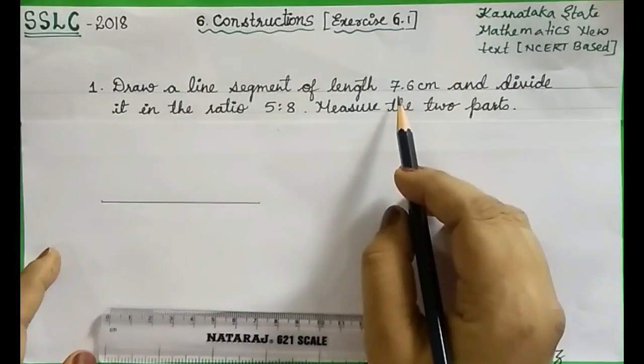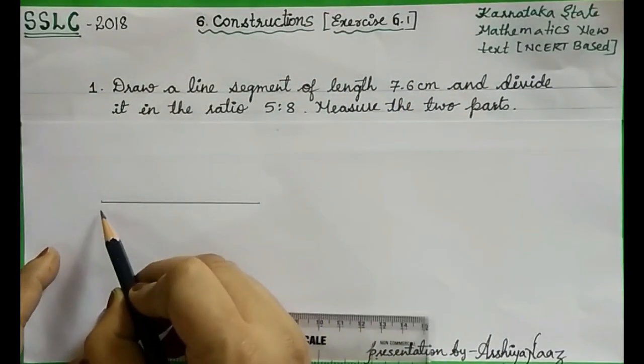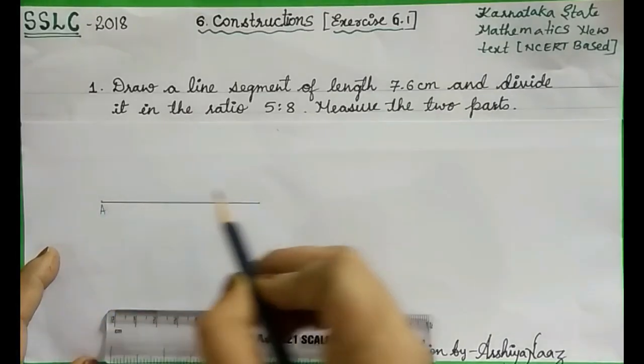This is a line 7.6 centimeter. Let us name it as AB.